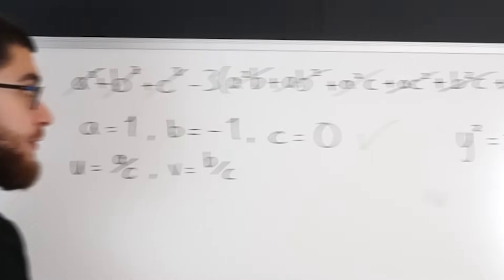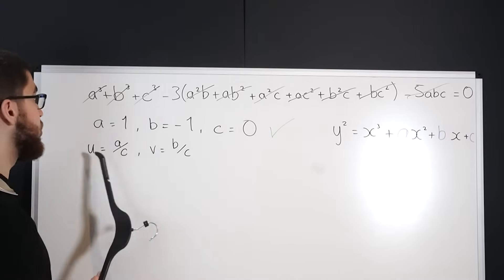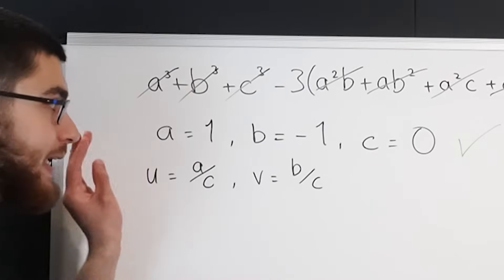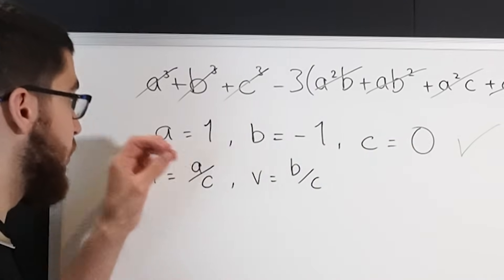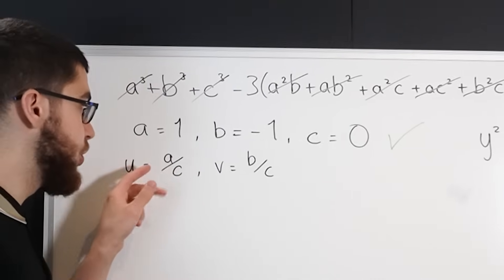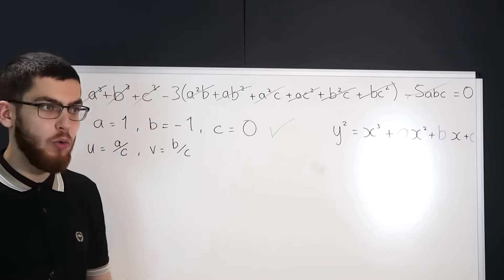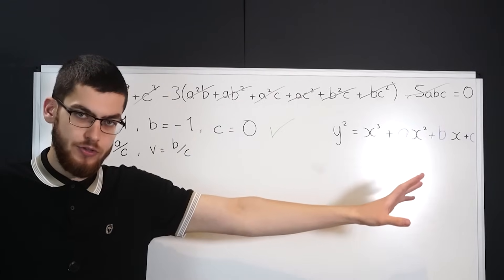So the next step is to transform this into the Weierstrass form of an elliptic curve and we do that by letting u equal a over c and v equal b over c. Remember we're not really interested in the exact values of c for example because what we really want is the ratio between a and c and b and c because remember when we multiply it all out eventually it doesn't really matter because we've really got a line of solutions, okay?